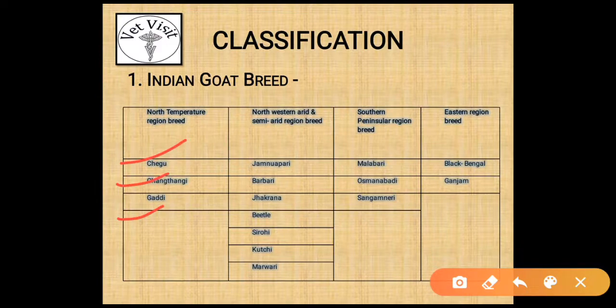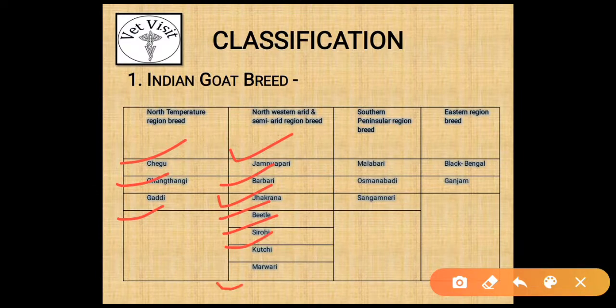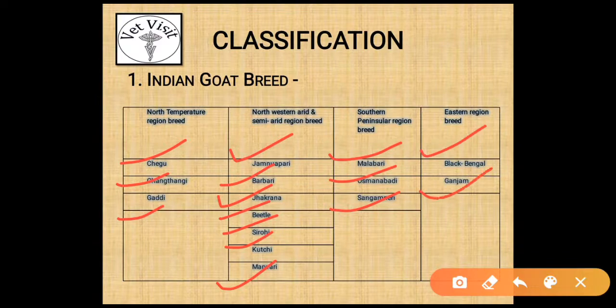North western arid and semi-arid region breeds include Jamunapuri, Barbari, Zakrana, Betel, Shirohi, Kachchi, and Marwadi. Southern peninsular region breeds include Malbari, Osmanbari, and Sangamneri. Eastern region breeds include Black Bengal and Ganjam.